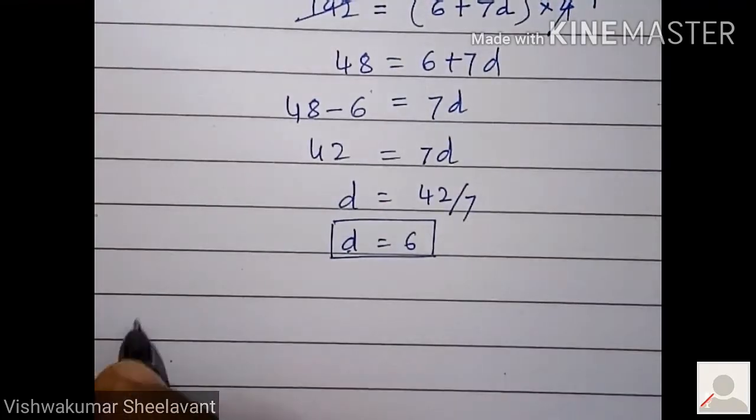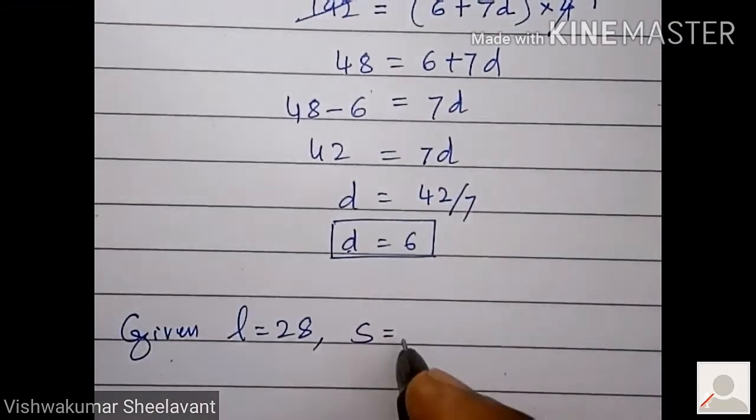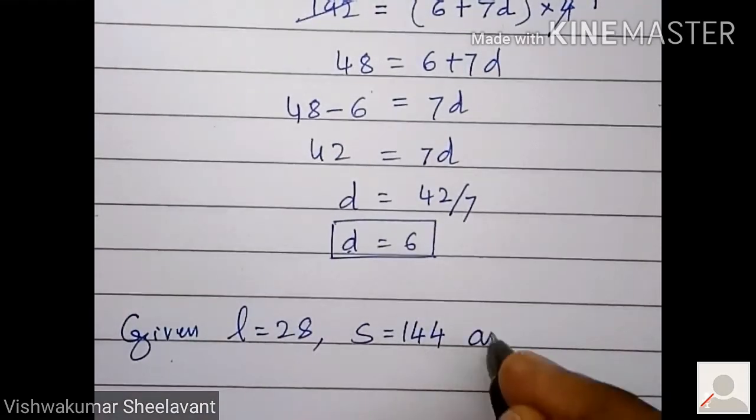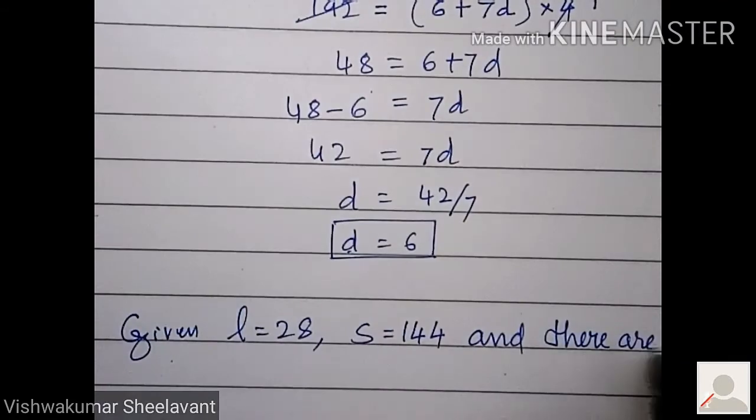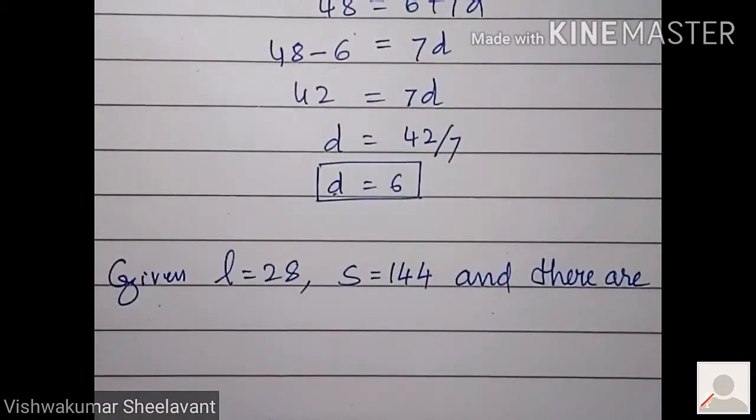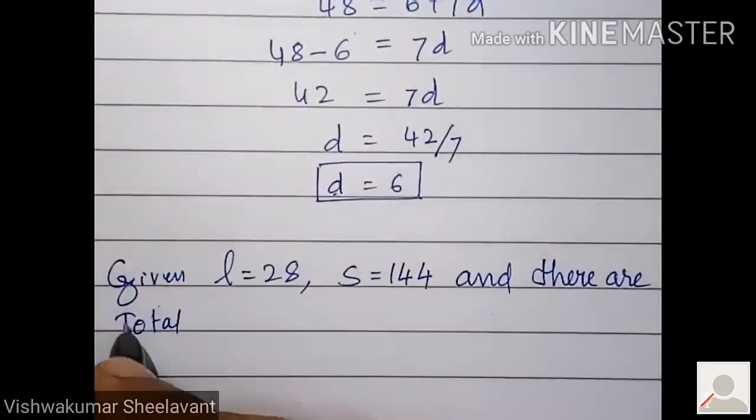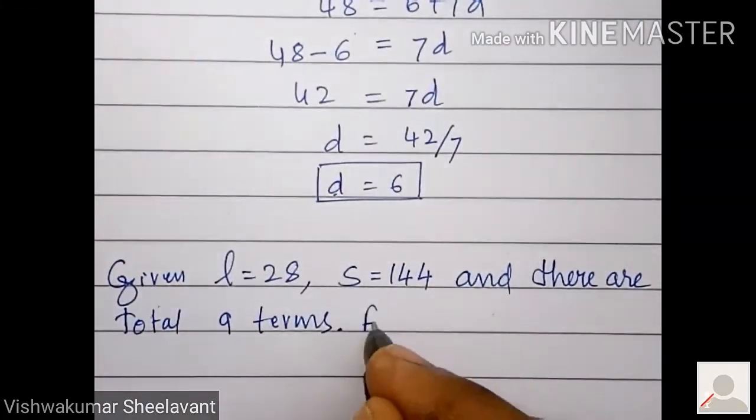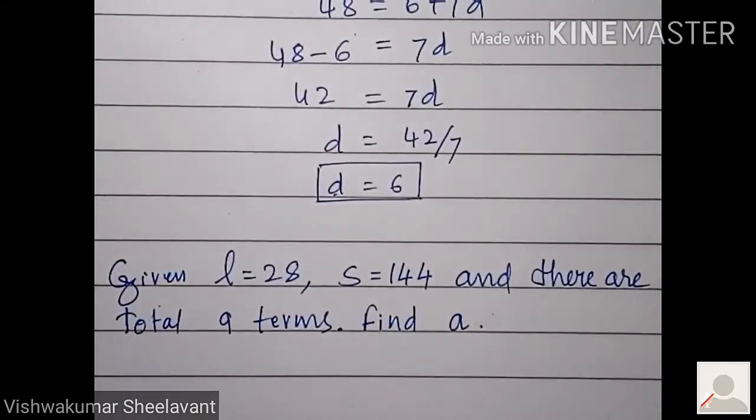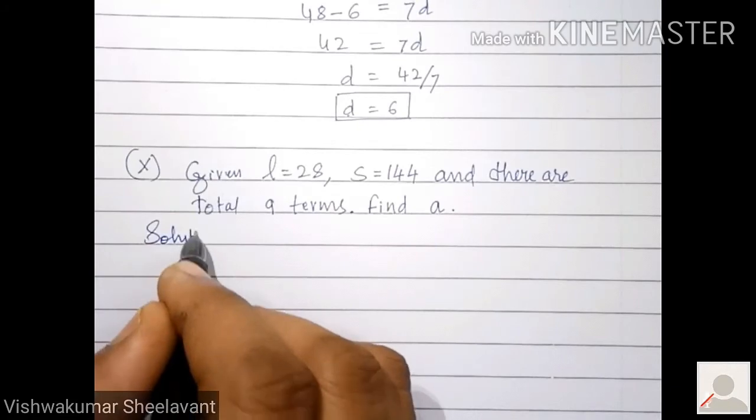10th question. Given total 9 terms, find a. Solution. l is 28 means a_n is 28. So a_n equals l equals 28.